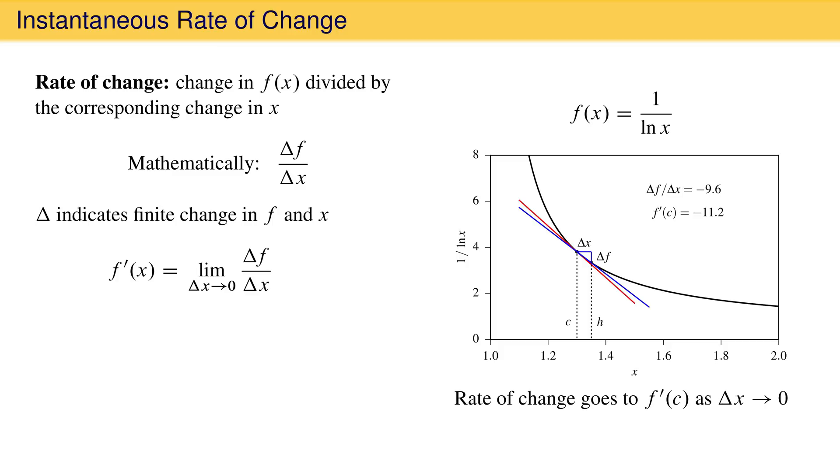As delta x approaches zero, both delta x and delta f become infinitesimally small. The notation we use to indicate this is df over dx.